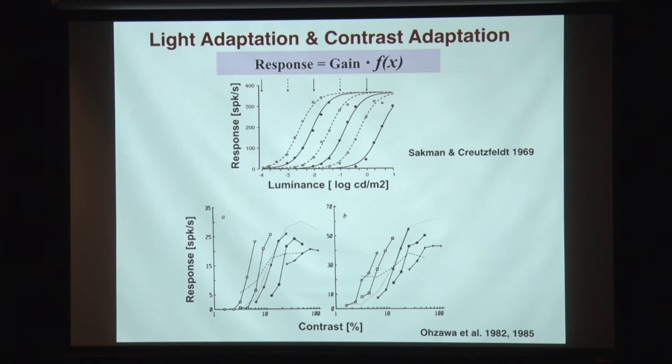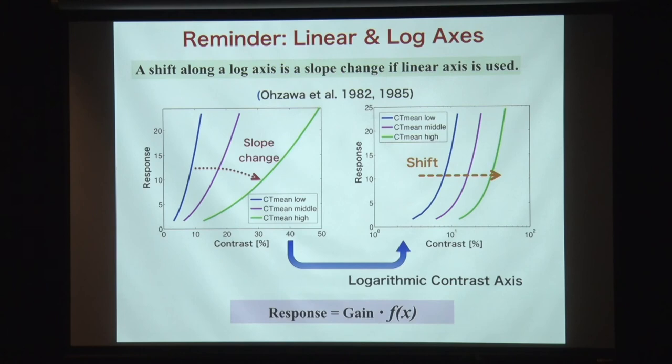This is called gain control. Light adaptation is a kind of gain control, described by a simple equation. The shift seen is along the log-contrast axis, but if you change the horizontal axis to a linear axis, it becomes a slope change — which intuitively fits with the gain parameter.